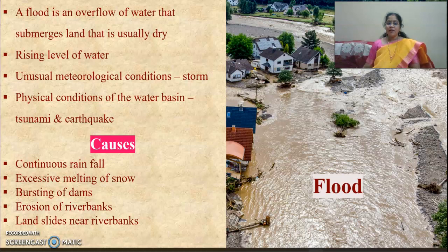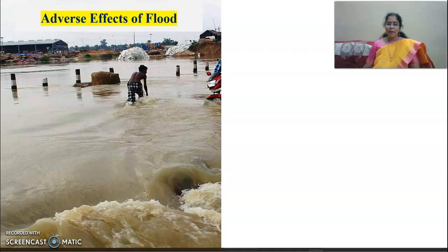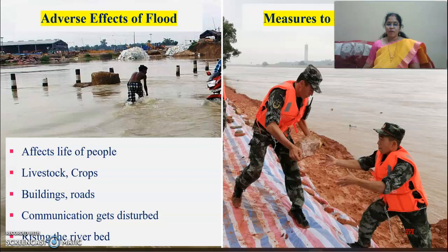Flood is the overflow of water that submerges land that is usually dry. It is caused by the rise of sea water or river water. Unusual meteorological conditions, strong physical conditions of the water basin, tsunami, and earthquakes can all result in floods. Continuous rainfall, excessive melting of snow, bursting of dams, erosion of riverbanks, and landslides near rivers are also causes of flood.